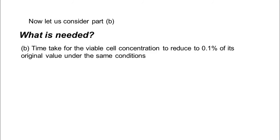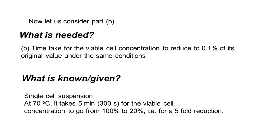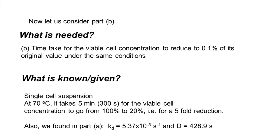Now let us consider part B. Again, we will ask the same questions. What is needed? The time taken for the viable cell concentration to reduce to 0.1 percent of its original value under the same conditions. What is known or given? Single cell suspension, the same as earlier. At 70 degrees C, it takes 300 seconds for the viable cell concentration to go from 100 percent to 20 percent. And also, we found in part A the value of kd and the value of the decimal reduction time. This is what is known. How do we connect what is known to what is given?